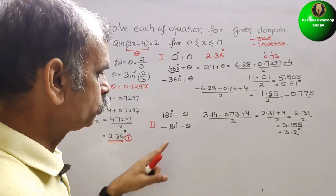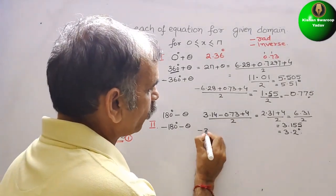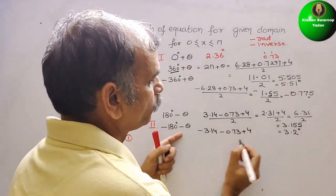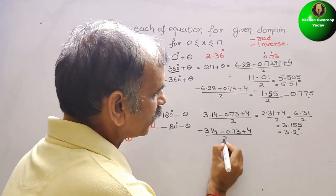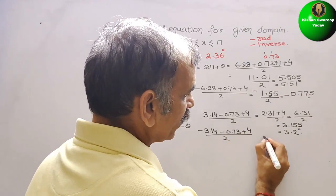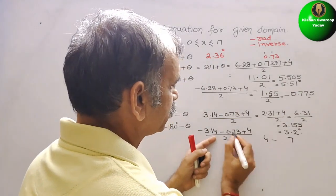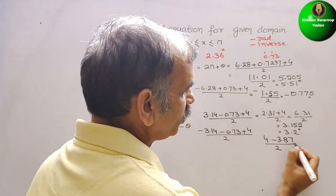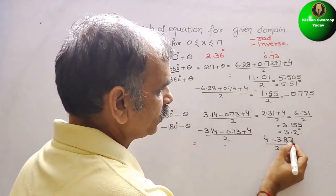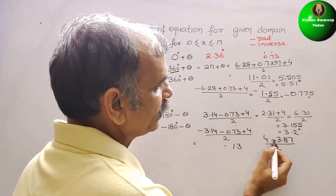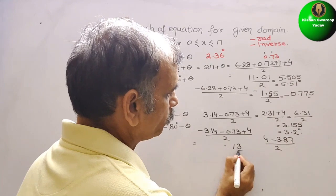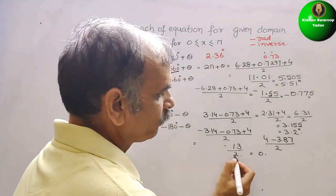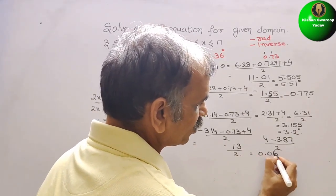For the −180° − θ case: −3.14 − 0.73 + 4, divided by 2. Both terms are negative so we add: 4 − 3.87 = 0.13. Divided by 2 gives approximately 0.065. This is the fifth solution.